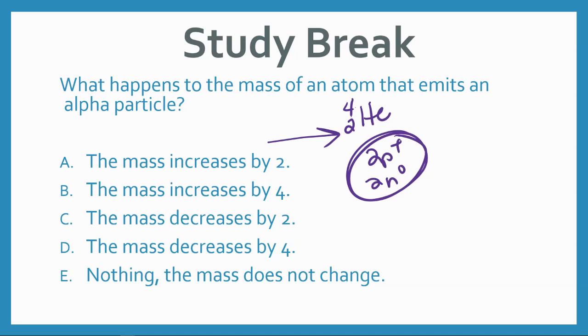The mass isn't getting bigger. The mass is getting smaller. And is it going to decrease by two or by four? Well, that depends. What contributes to mass? Protons? Neutrons? Both? Both of them do. So the mass is going to decrease by four.